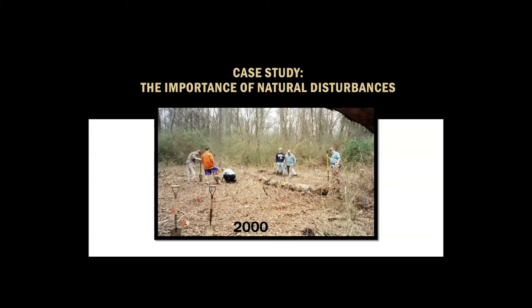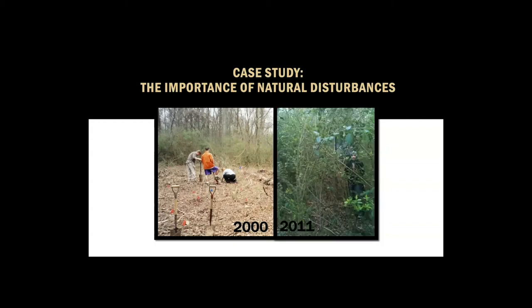Unfortunately, however, the trees that were planted were unable to survive and thrive because the disturbance regime to which they were adapted no longer occurred in this area. Plus, Chinese privet was able to move back in and thrive in the absence of the disturbance. This following example is intended to help you understand why disturbances can be so important in terms of restoration and land management.